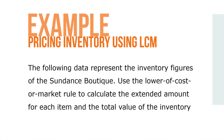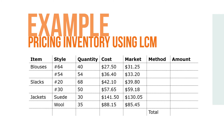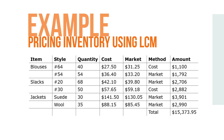Here's an example. The following data represents the inventory figures of Sundance Boutique. Use the lower of cost or market rule to calculate the extended amount for each item and the total value of the inventory. In this example, the cost and market price are given. We begin by choosing the lower of the cost or market and extending each item to the amount column.